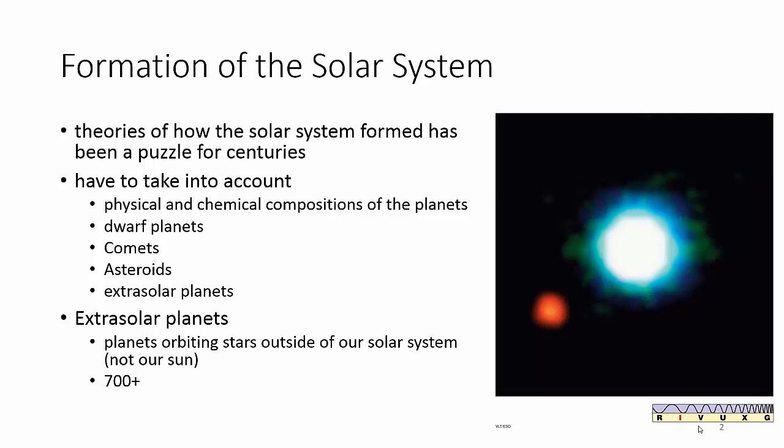Extrasolar planets are planets that orbit a star outside of our solar system. So they have a different sun than we do. Now, this number keeps changing. But it says 700 here, 800 and counting. And every semester that I teach this, there seems to be another planet that's found out there.